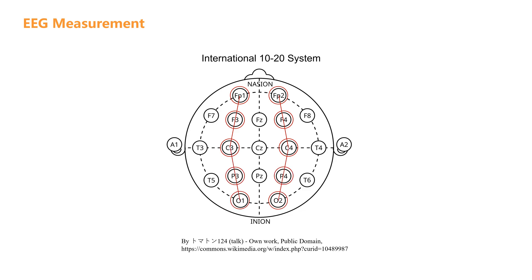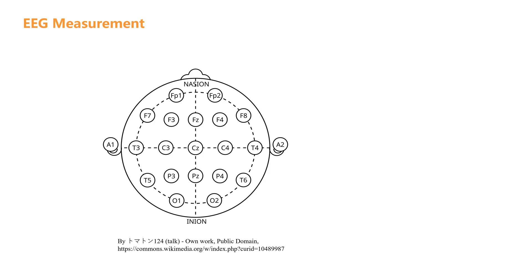Similarly, P3 and P4 are located midway between C3 and C4, and O1 and O2, respectively. This standardized placement method ensures the reproducibility of EEG experiments and the comparability of data.